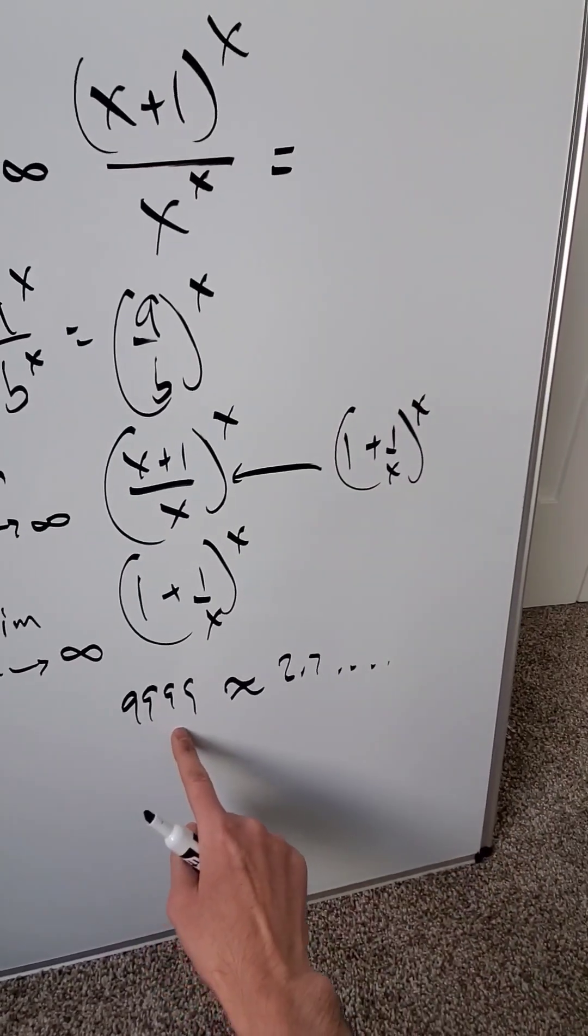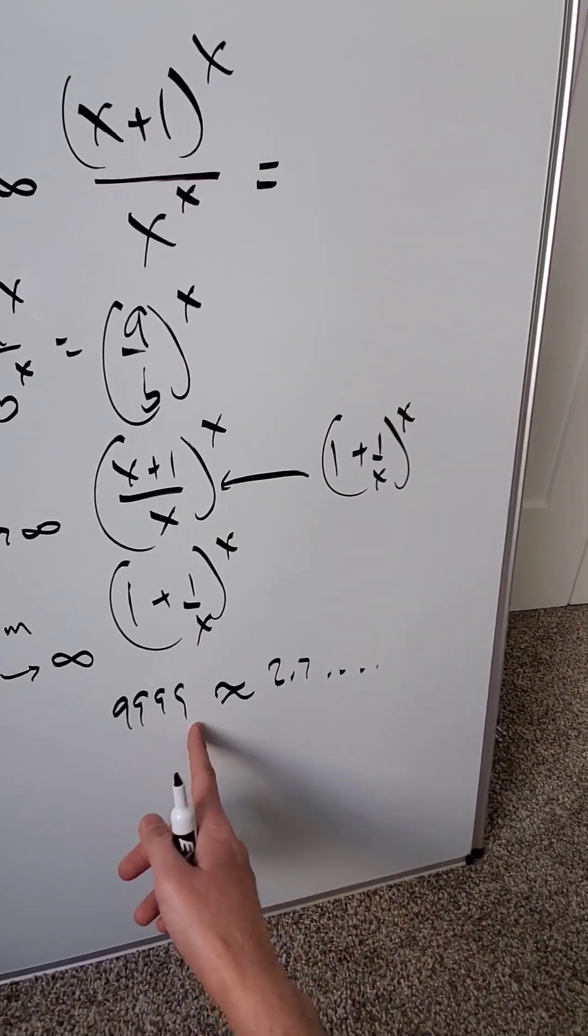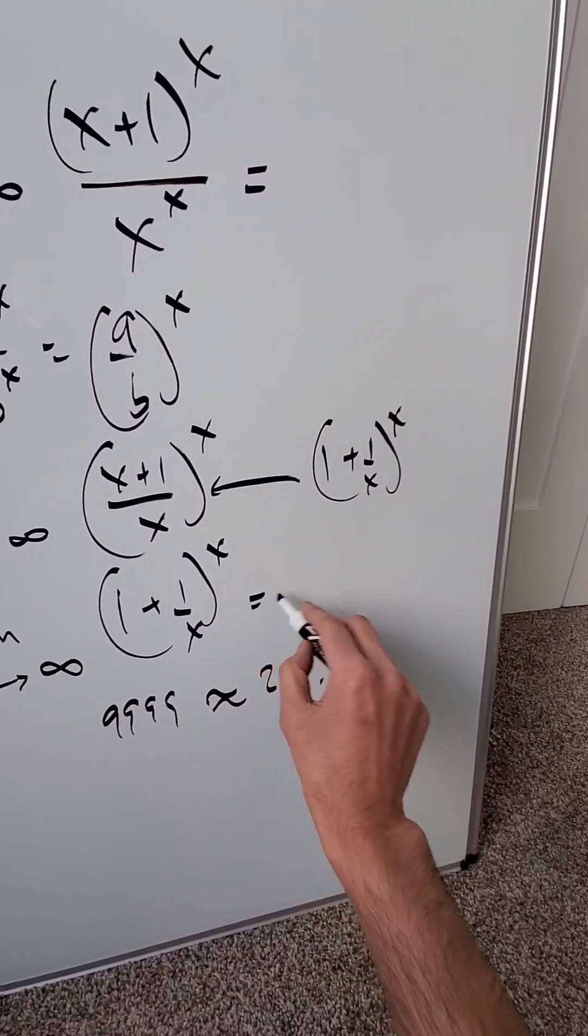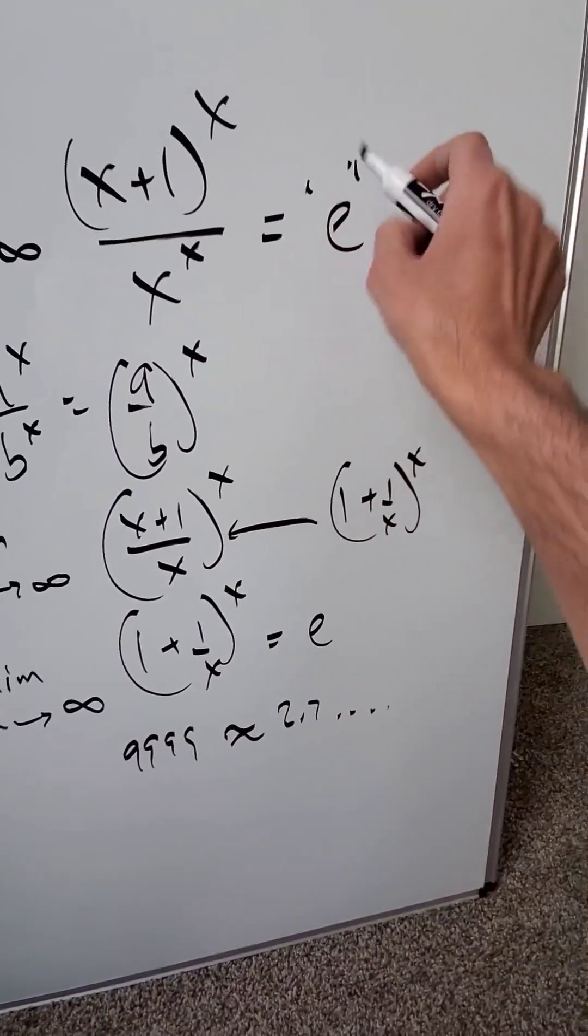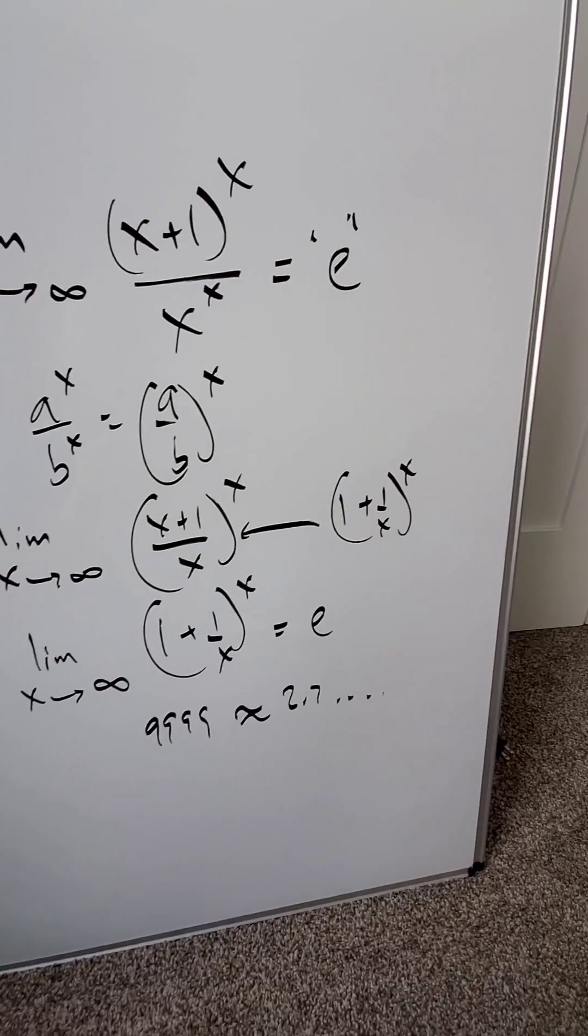But as you make this value larger and larger, closer to infinity, this value will actually approach the value of e, your Euler's number, and that will be the end result of this limit question.